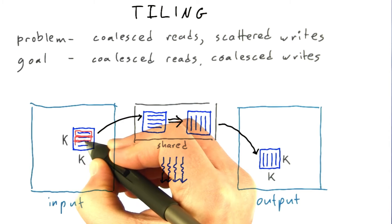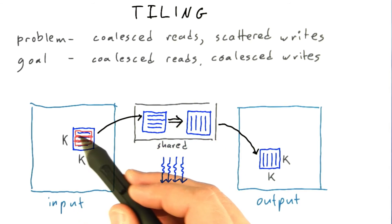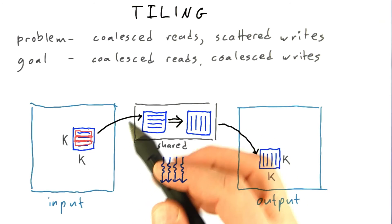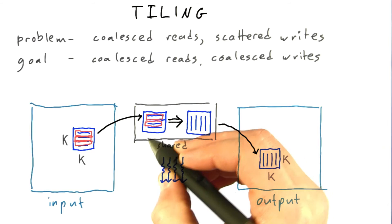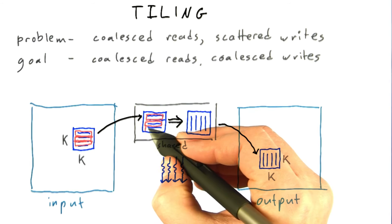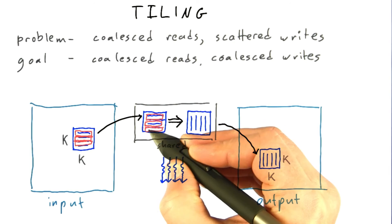each warp will copy out a chunk of 32 elements at a time into shared memory. And because all 32 threads in that warp are reading and writing adjacent locations in memory, you'll get good coalescing.